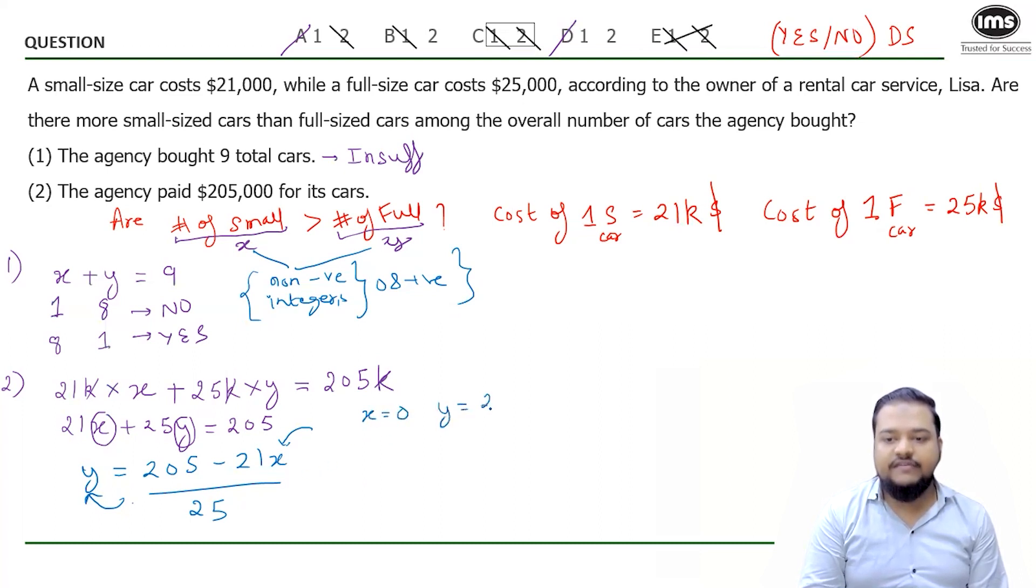Let's say I put X equals zero here. What will be Y? Y will be 205 minus zero upon 25, and that will be 41 by 5, which is not an integer. Hence, this solution is not acceptable.